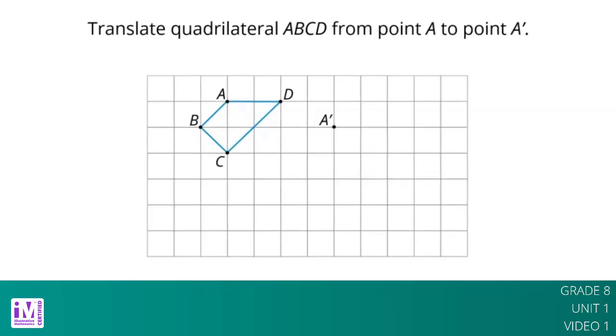We can also describe a translation with just two points. If a translation moves point A to point A prime, it moves the entire figure, quadrilateral ABCD, the same distance and direction as the distance and direction from A to A prime. The distance and direction of a translation can be shown by an arrow.